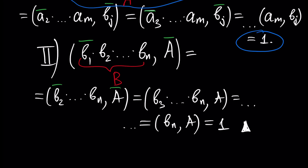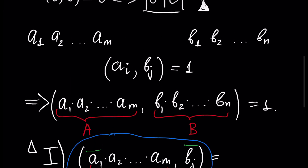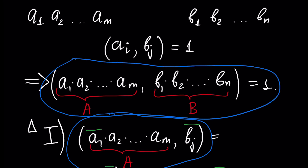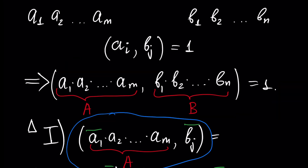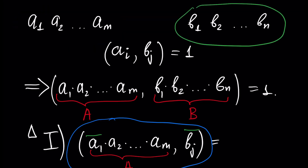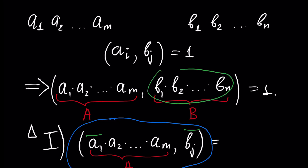This is the proof of our theorem, since we proved that GCD of A and B is equal to 1. Let's formulate our theorem again: assume we have two sets of numbers A1, A2, AM and B1, B2, BN. Assume each element of the first set is co-prime, or relatively prime, with each element of the second set. In this case, the multiplication of all elements of the first set is co-prime with the multiplication of all elements of the second set.